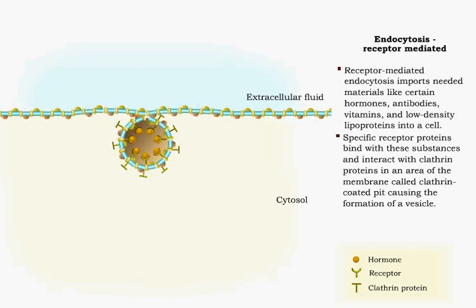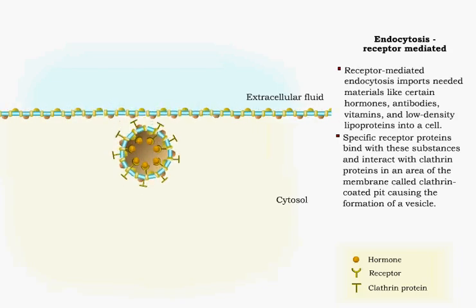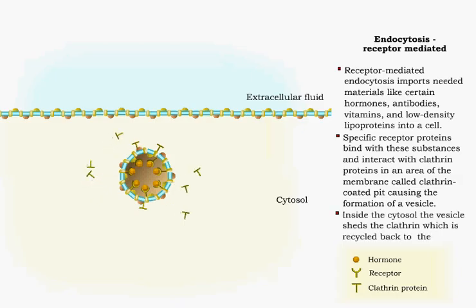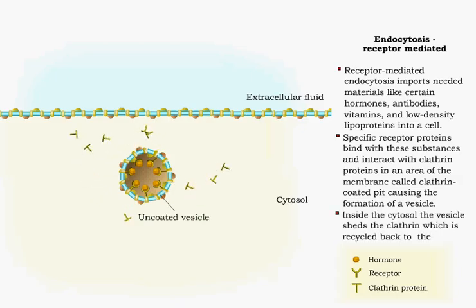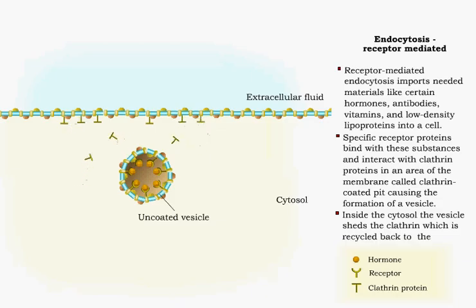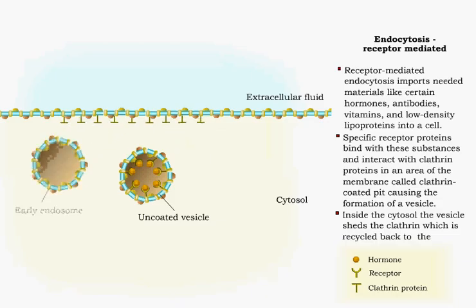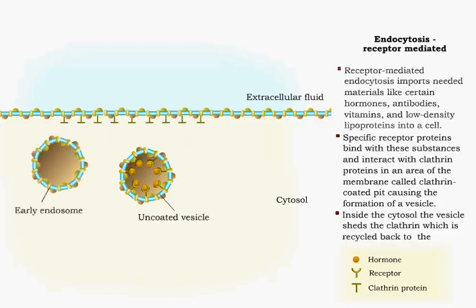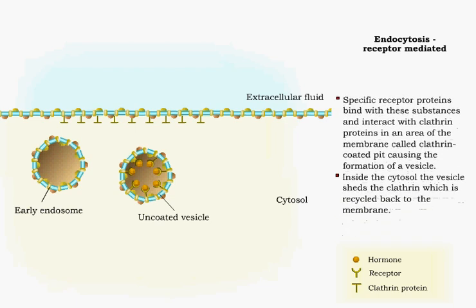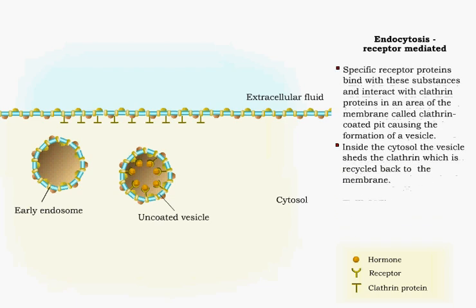Once inside the cytosol, the vesicle loses its clathrin, which is recycled back to the membrane. The uncoated vesicle now fuses with a vesicle called an endosome, where the substance and the receptor are separated and sorted.